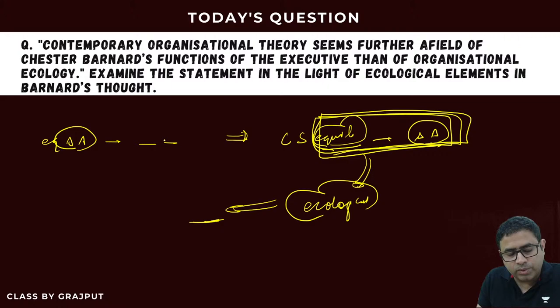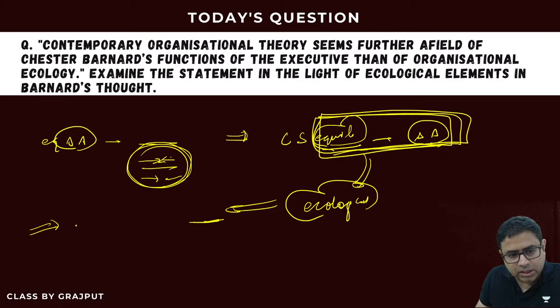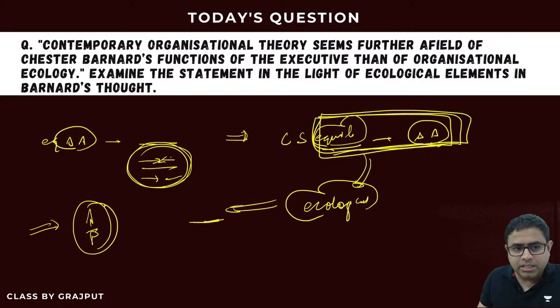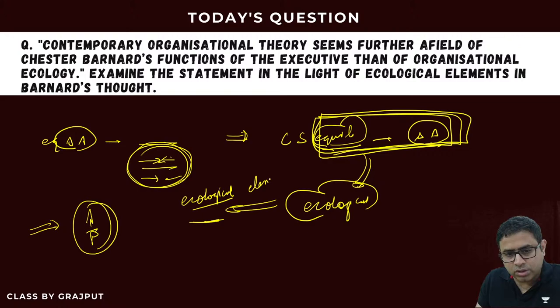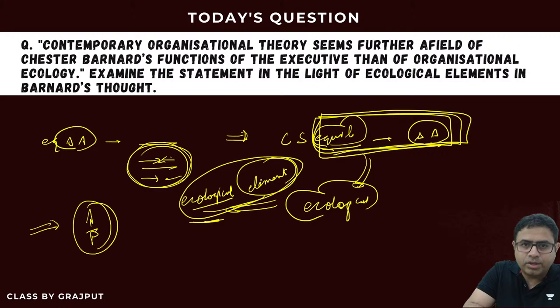For example, Stacy Adams' equity theory states that every employee compares their own inputs and outputs with those of others. Then there is Porter and Lawler's model on ability and performance, meaning an employee is motivated by comparing himself with others. So the ecological perspective and ecological element is very important in organizations.